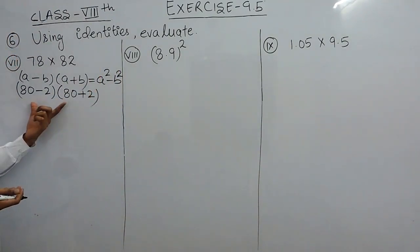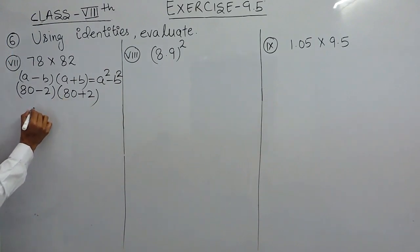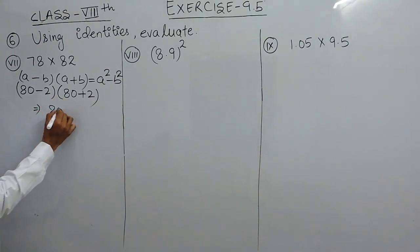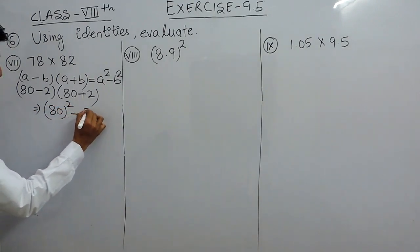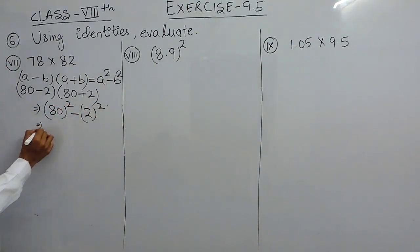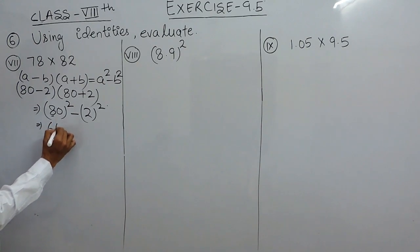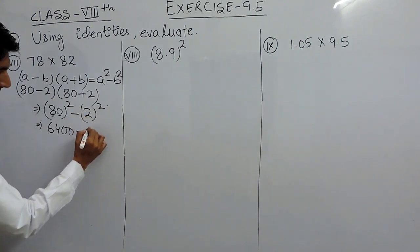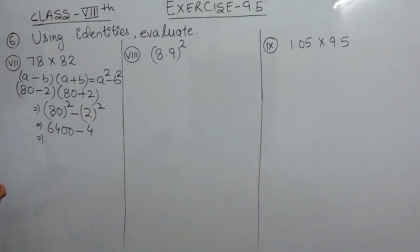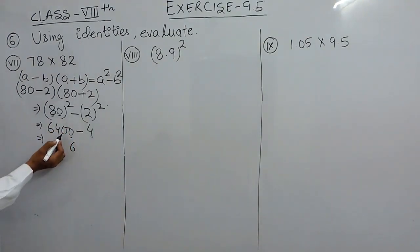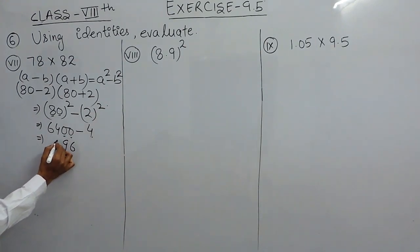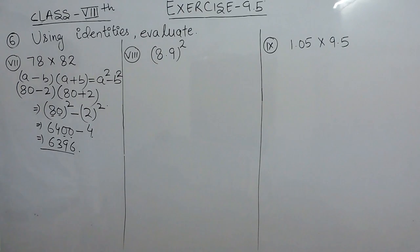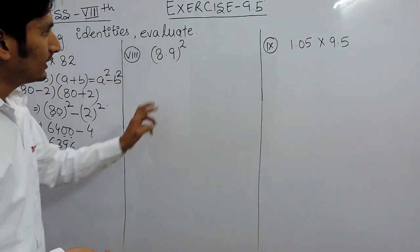So to solve this, I have to use this identity. This number equals a square which is 80 squared, minus b square which is 2 squared. We know how to find the square of 80 — it is 6400. Minus 2 squared is 4. So 6400 minus 4: 10 minus 4 is 6, take one carry, here it is 9, so it is 3 and 6. The answer is 6396.